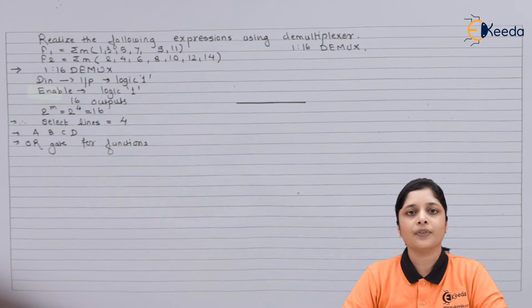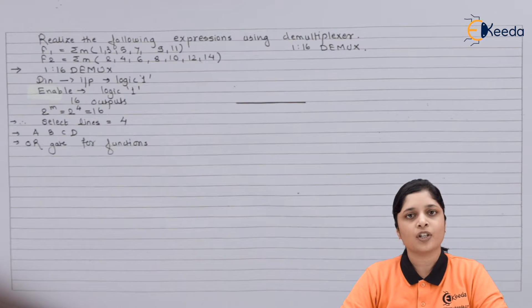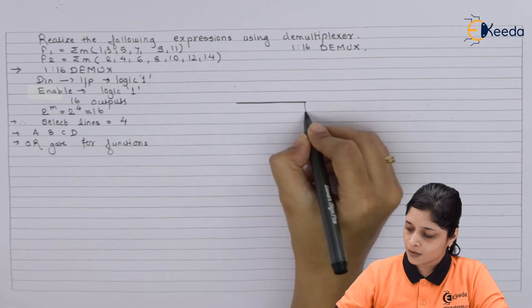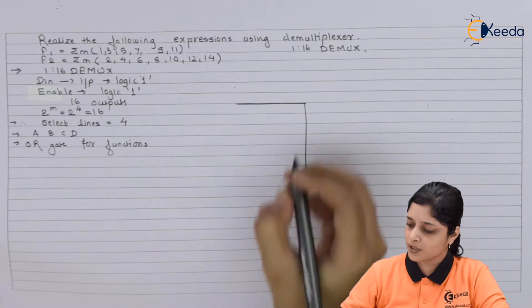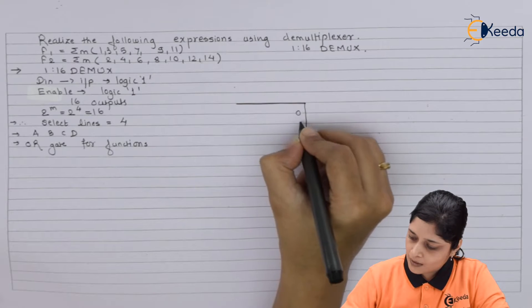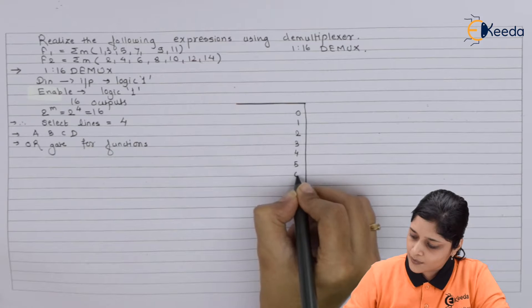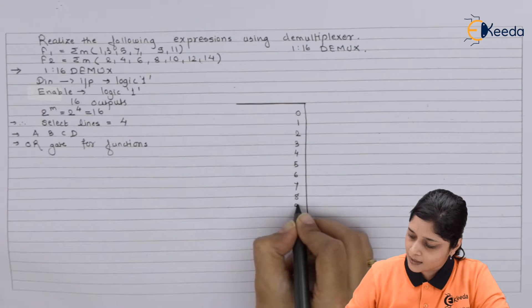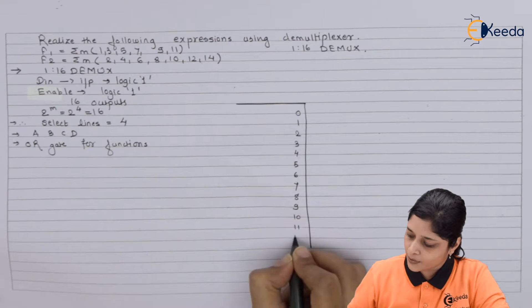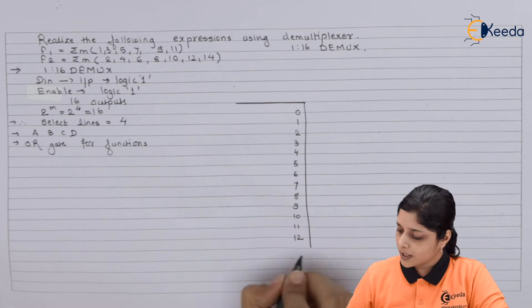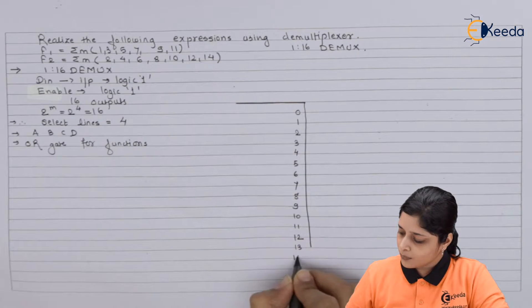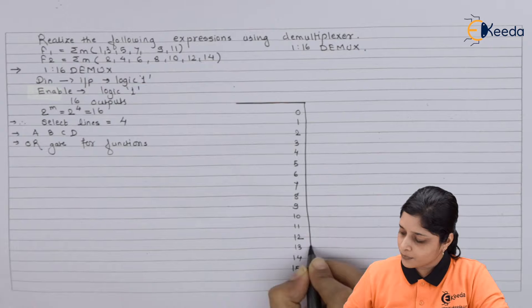These are the important points we have collected, so we will draw one diagram for demultiplexer of 1 to 16. At the output side we have 0, 1, 2, 3, 4, 5, 6, 7, 8, 9, 10, 11, 12, then 13, 14, and last you have the 15.